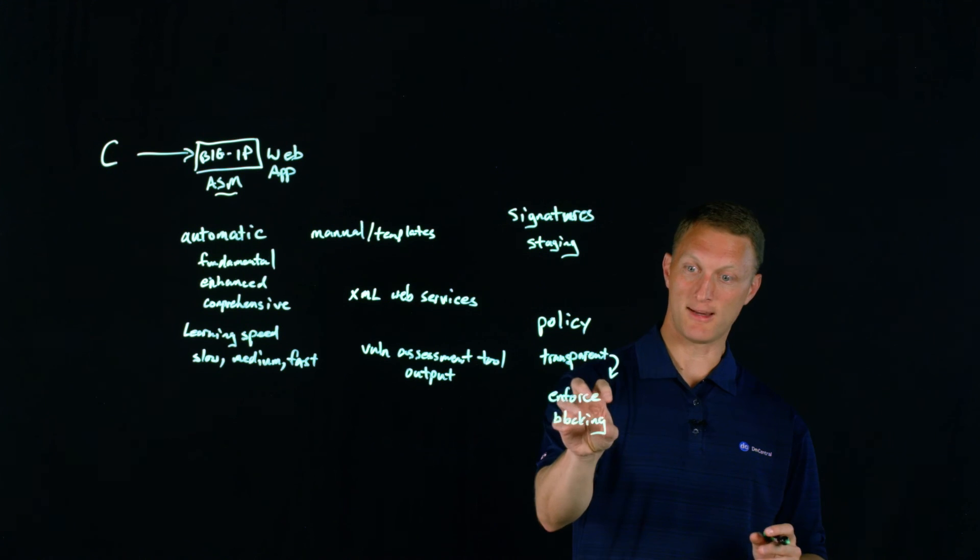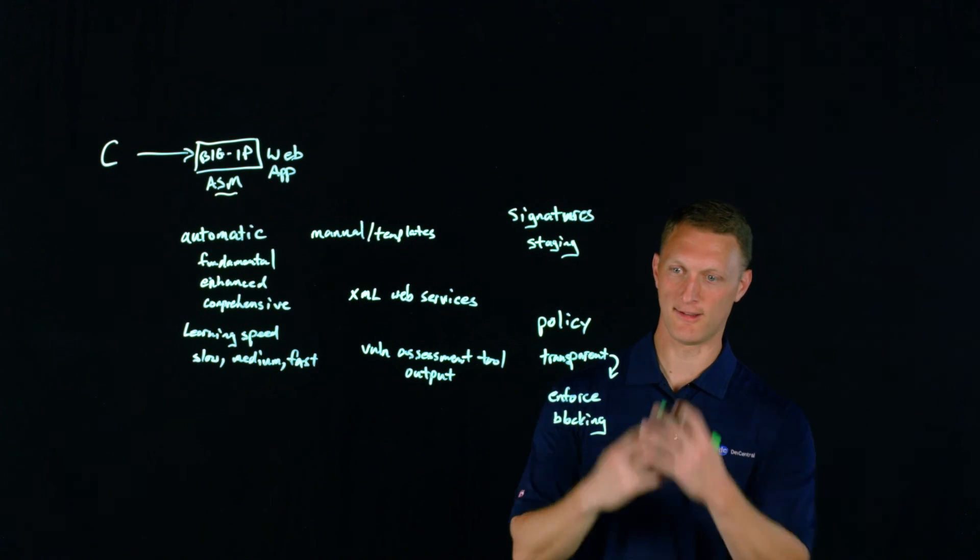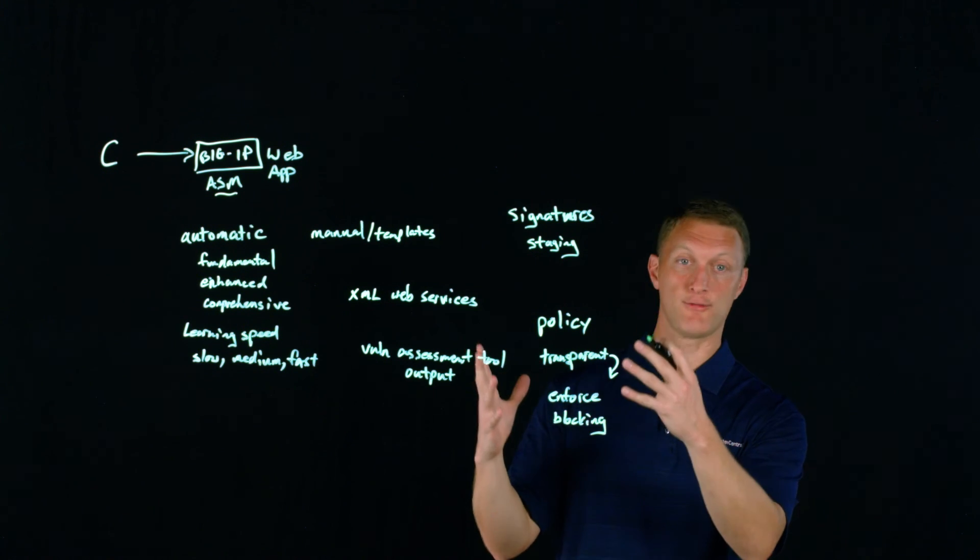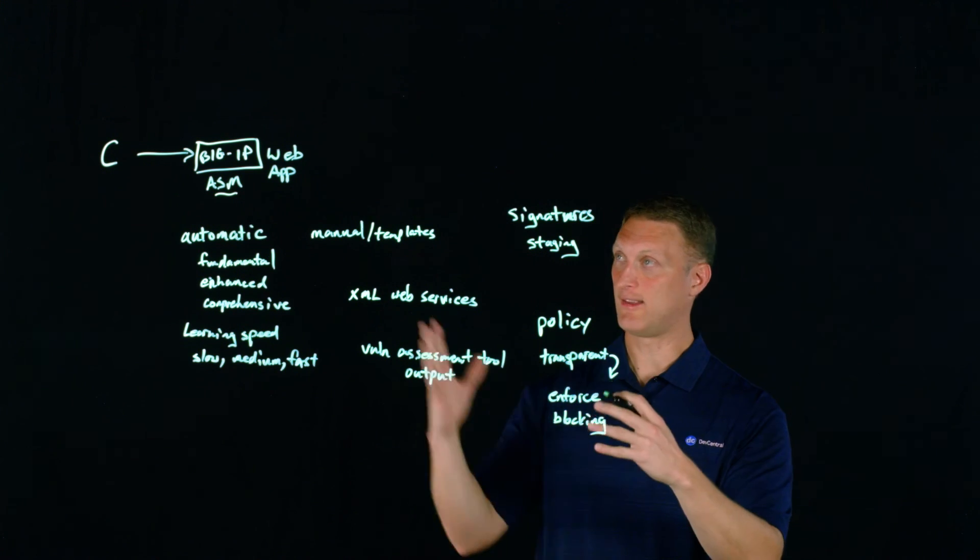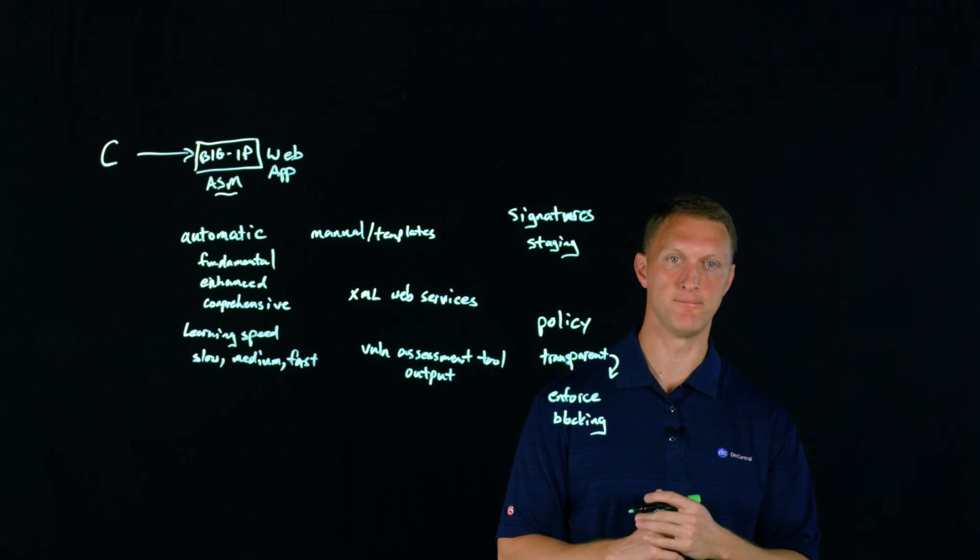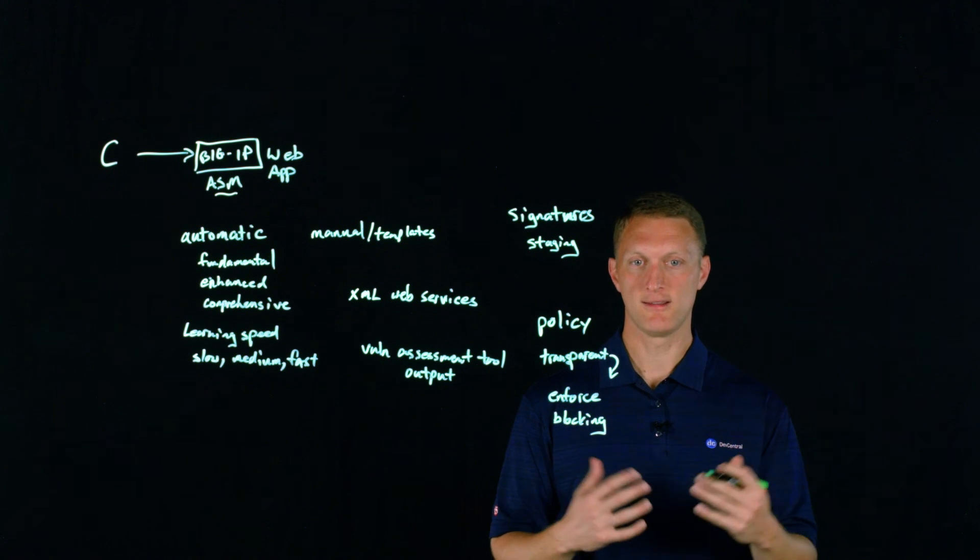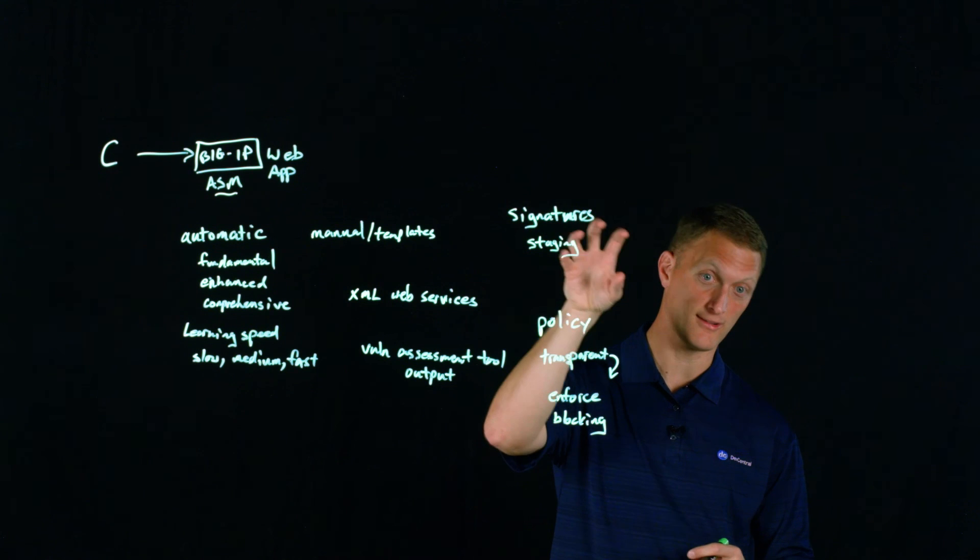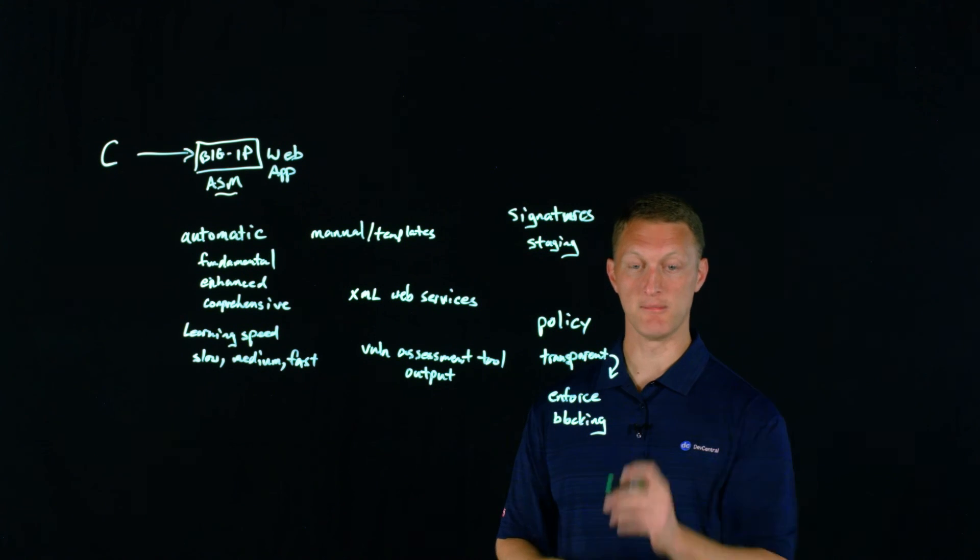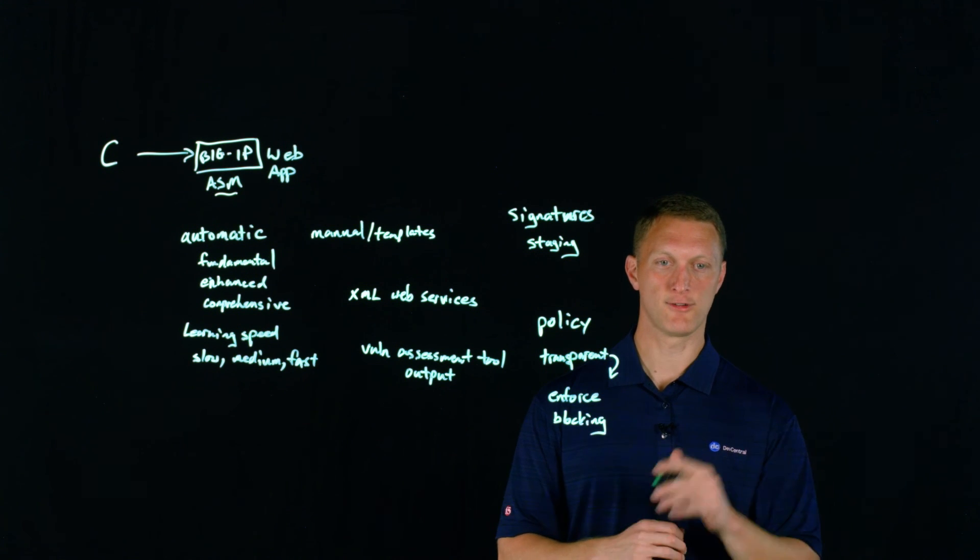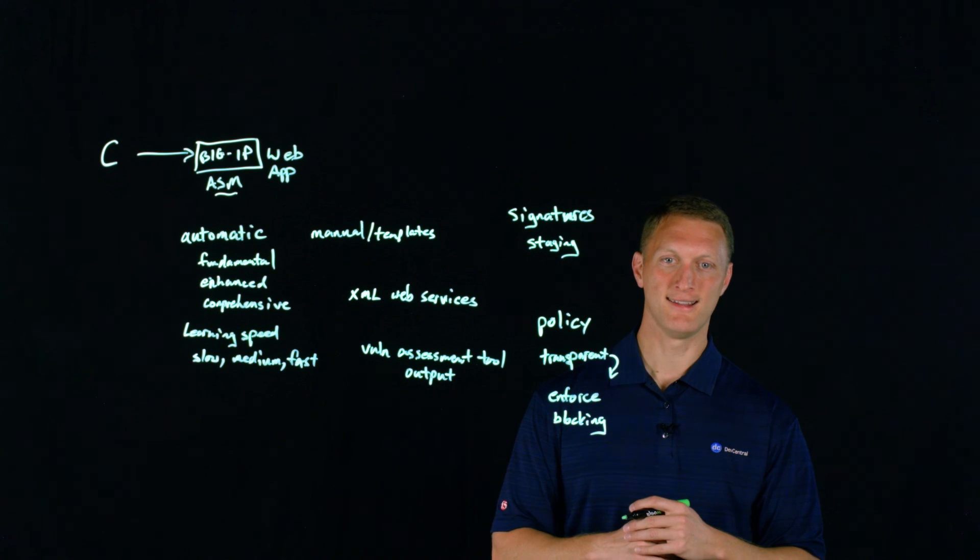So until all that happens, it actually won't block anything. So again, ASM is a very powerful tool. It does a lot of things that keeps your web application safe. So get out there and mess around with some of these different policy building options that you have. And then understand some of these things with signature staging versus not staging and make sure you put your policy in blocking mode, so that it can enforce the actual policy and start blocking all the bad guys. So thanks for watching this light board lesson video today, and we'll see you guys out there in the community.